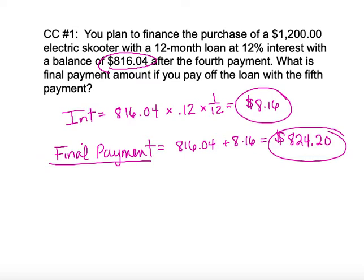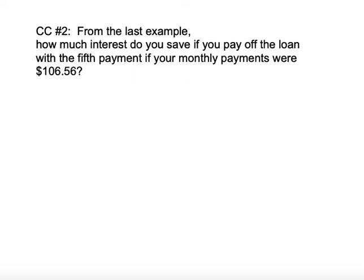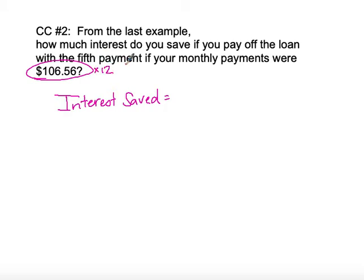In our next concept check, using the same information, it asks: how much interest do you save if you pay off the loan with the fifth payment, if your monthly payments were $106.56? We're calculating how much interest was saved. If his monthly payment was $106.56 for 12 months, we need to calculate what he would have paid back if he kept the loan for the entire year. We'll take $106.56 and multiply that by 12, giving us $1,278.72. That's what he should be paying back for that scooter that originally cost $1,200.